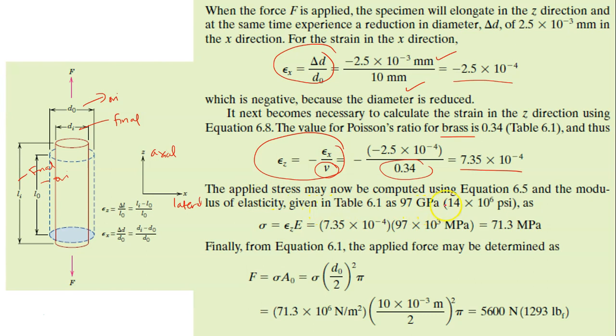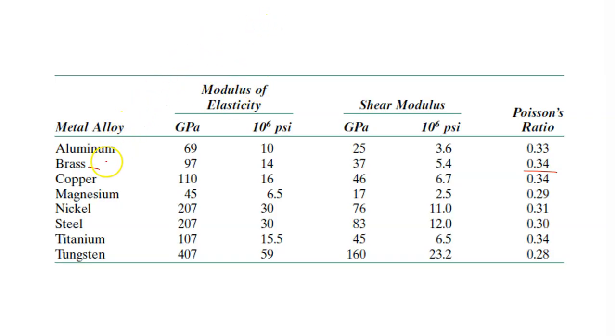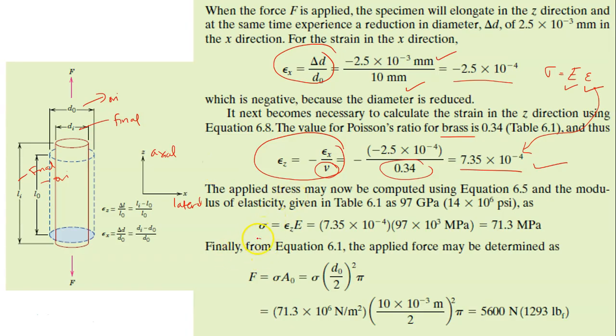The applied stress can now be computed using Hooke's Law: stress equals modulus of elasticity times strain. The strain is the axial strain calculated earlier. The modulus of elasticity for brass from this table is 97 GPa (or 14 × 10⁶ psi). This is Hooke's Law, this is the calculated strain, and this is from the table. You get 71.3 MPa for the stress.